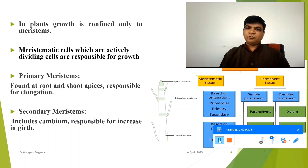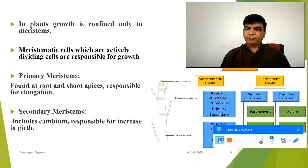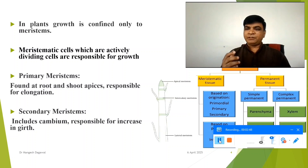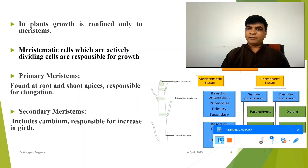During growth, once the meristematic cells divide and form a number of cells, they undergo differentiation and form permanent tissues — simple tissues such as parenchyma, collenchyma, and sclerenchyma, and complex permanent tissues such as xylem and phloem. All these tissues are involved in the growth of the plant.